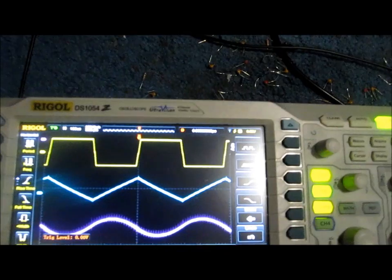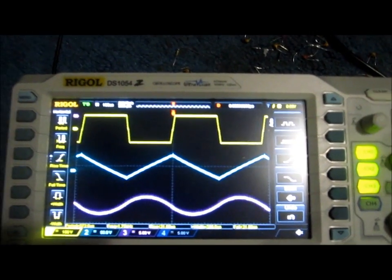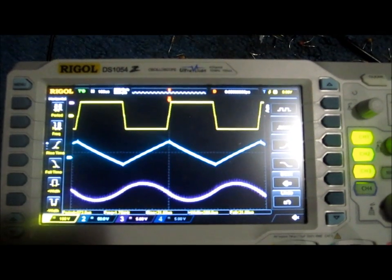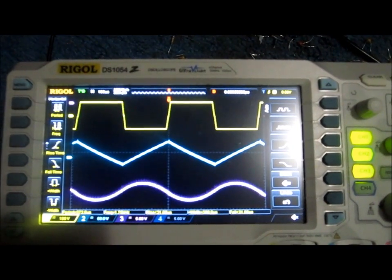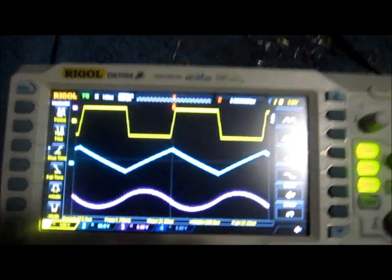So this is how a simple function generator circuit can be built with the LM324. To see a more detailed explanation of how this circuit works, please click the link below. Thanks for watching.